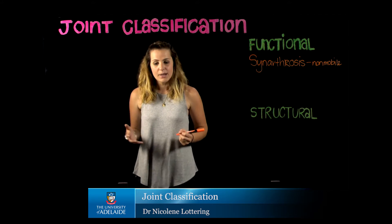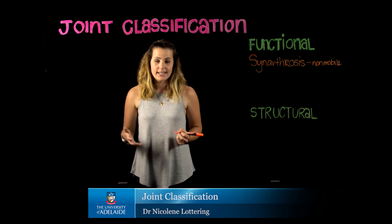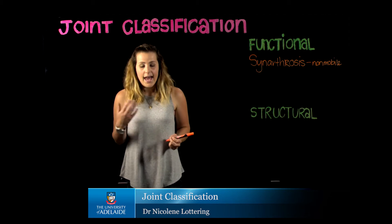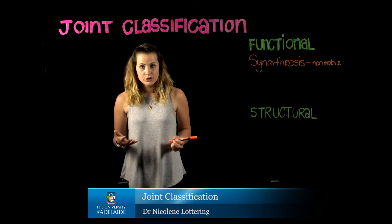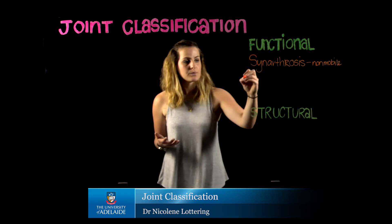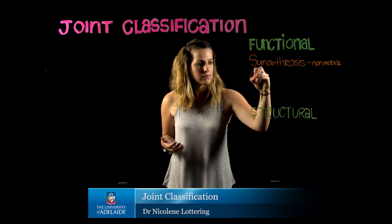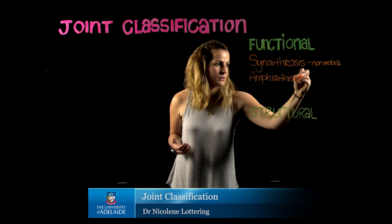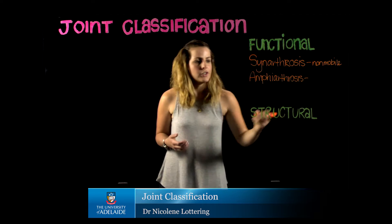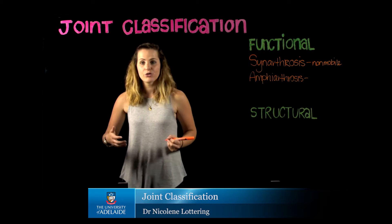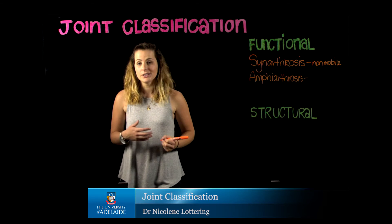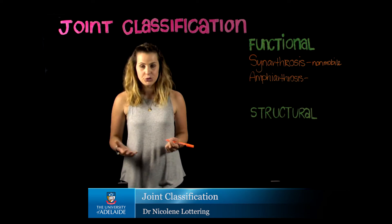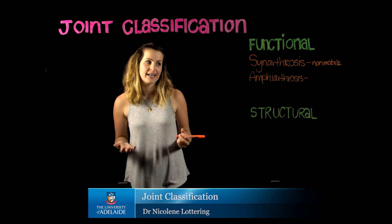The second type of joint is going to be an amphiarthrotic joint. Our amphiarthrotic joints are going to allow some movement to occur, but not a great deal.